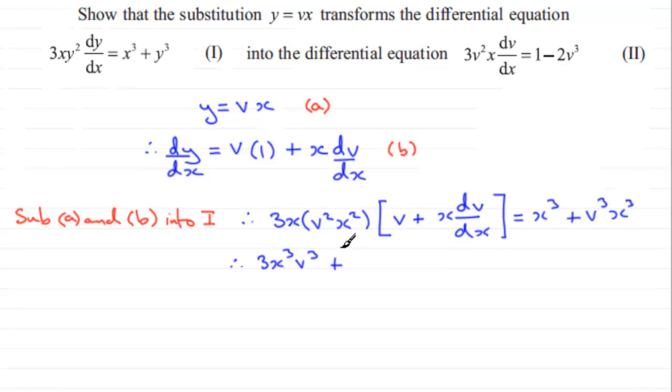We've got 3x cubed here multiplied by that x is going to give me 3x to the power 4, and then we've got v squared and dv by dx, and then that equals x cubed plus v cubed x cubed.